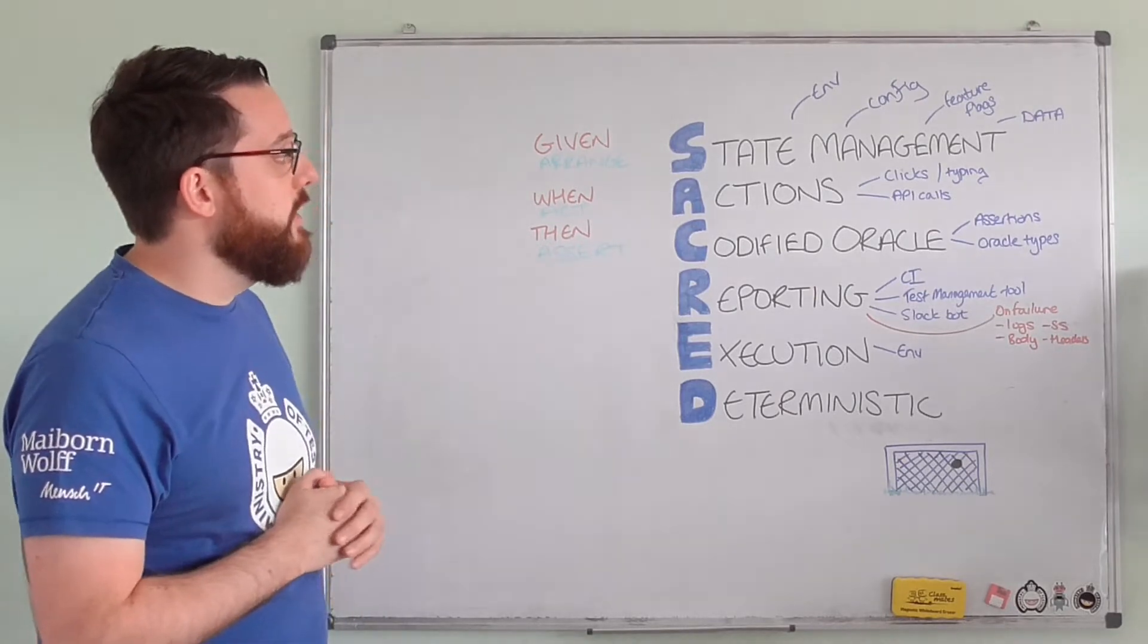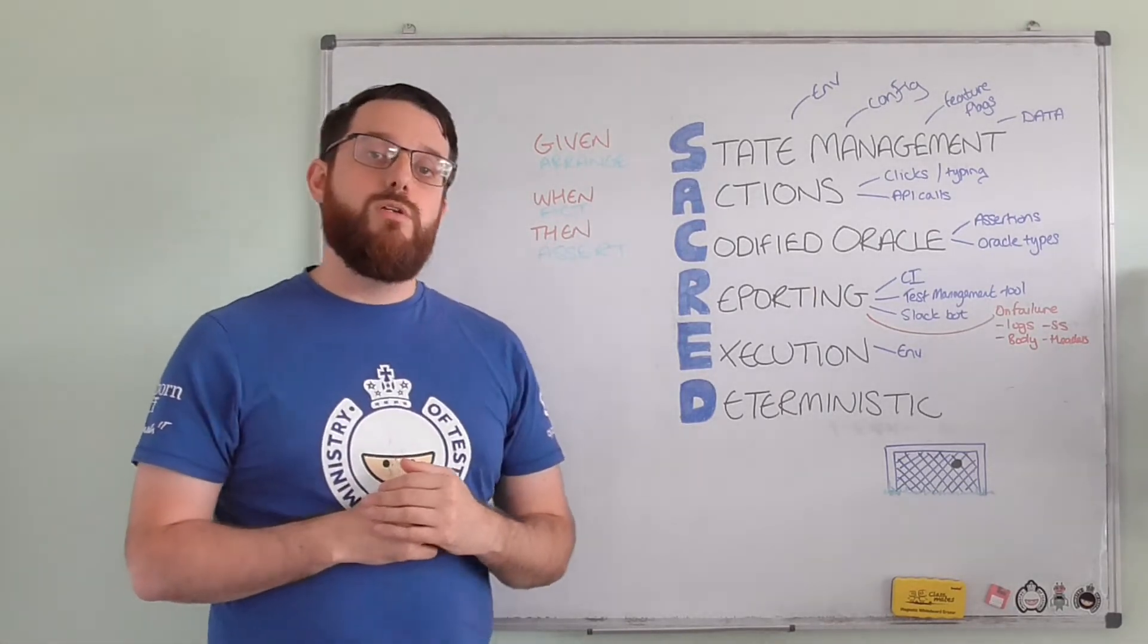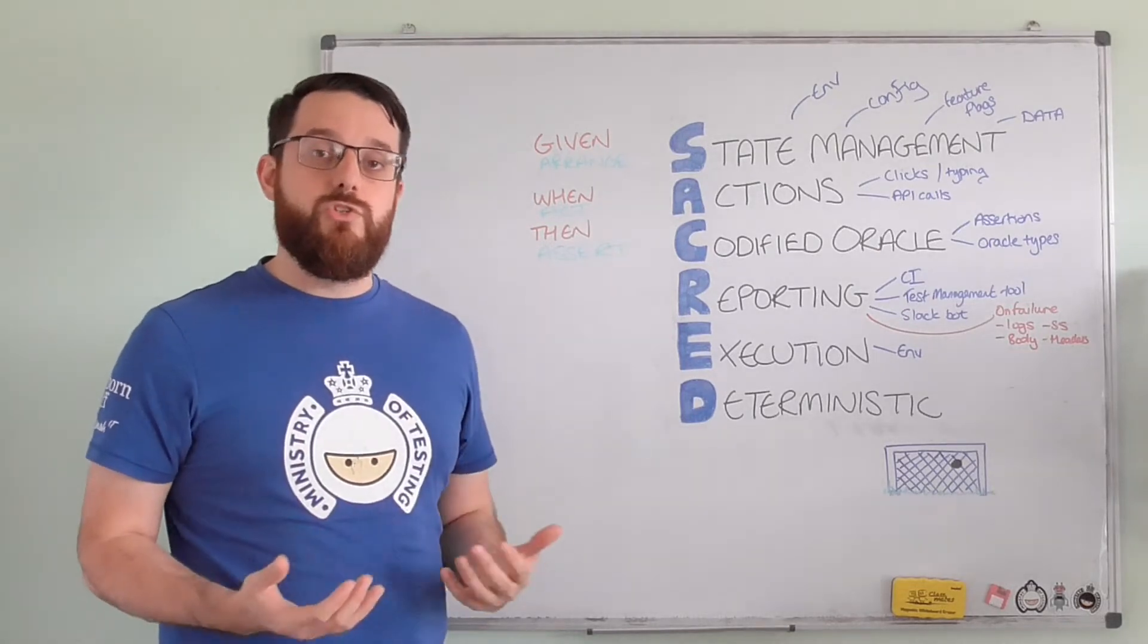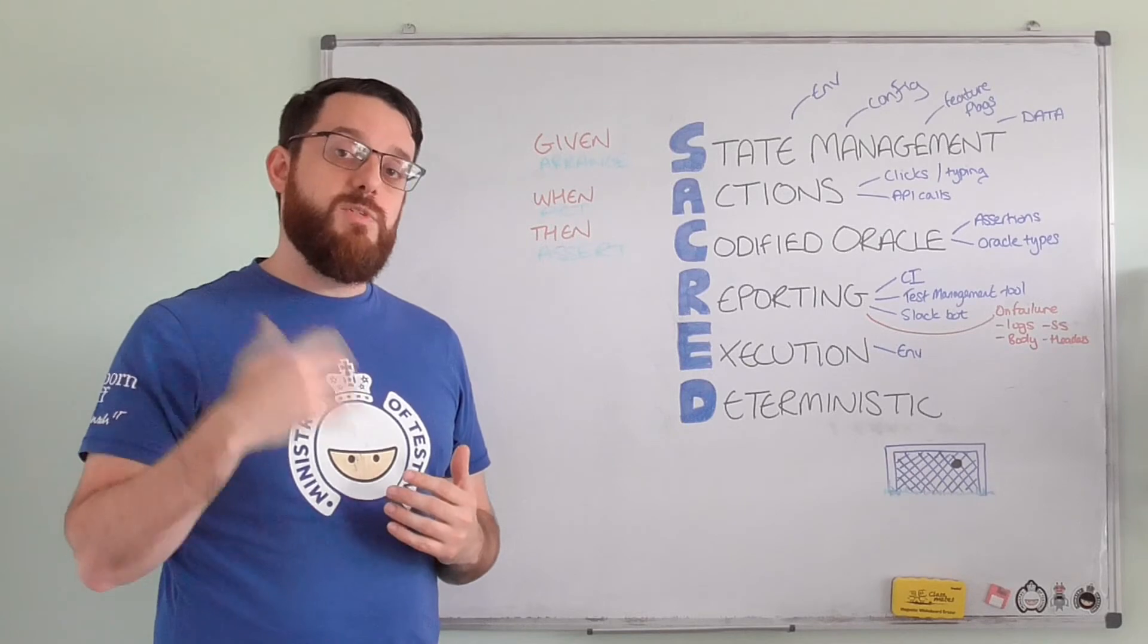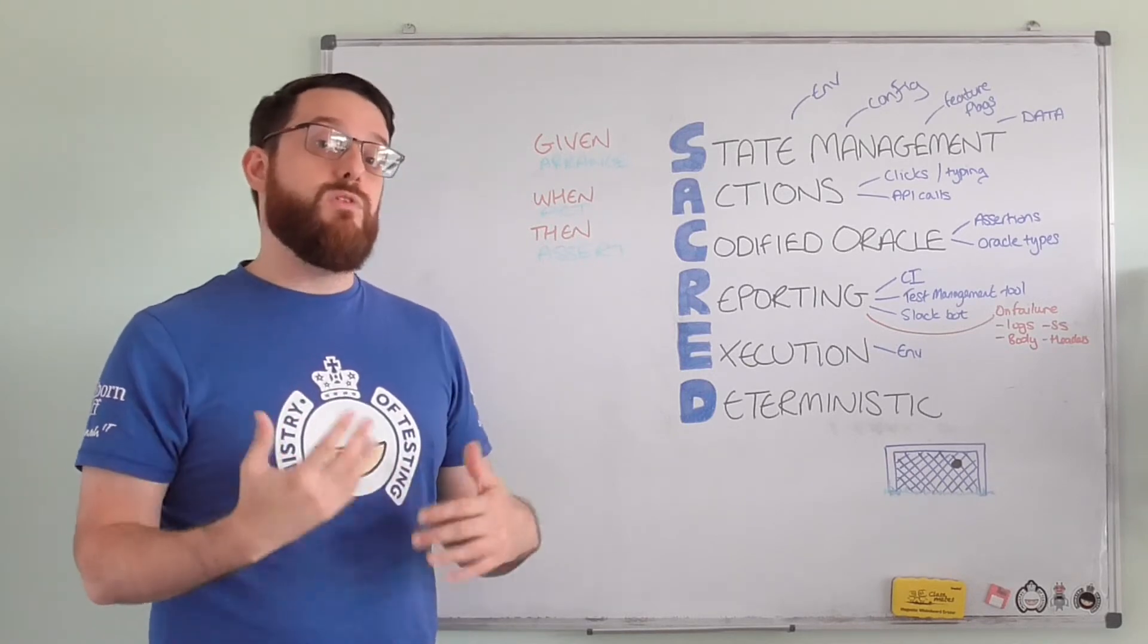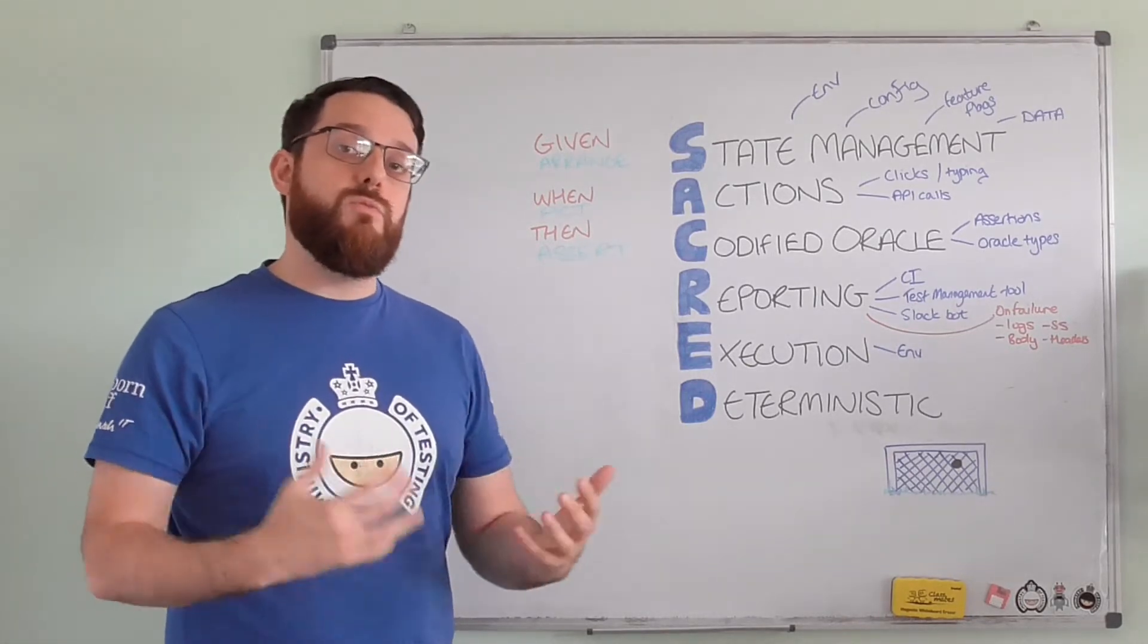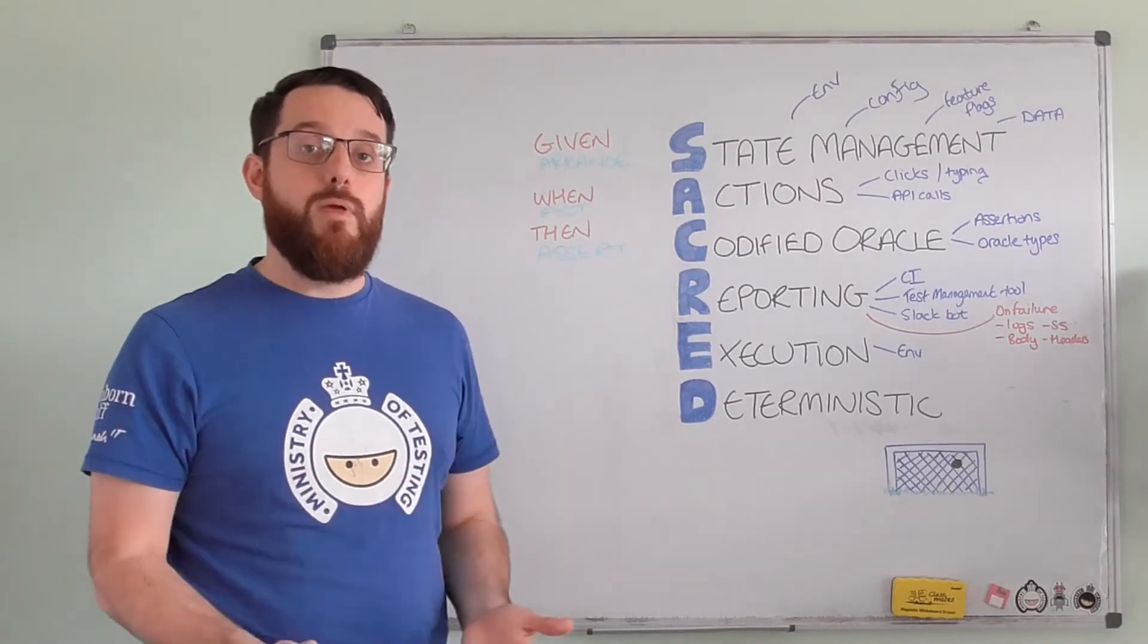That's the actions. Then the C stands for Codified Oracle. This is what we tend to talk about as assertions. But obviously in some of the testing space we talk about exploratory testing a lot, and within that we talk about oracles. Oracles being how we know if something's right or wrong or if there's a problem here.